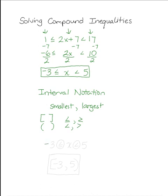For our solution, negative 3 is less than or equal to x, which is less than 5. The smallest number that x can be is negative 3 and the largest that x can be is 5.